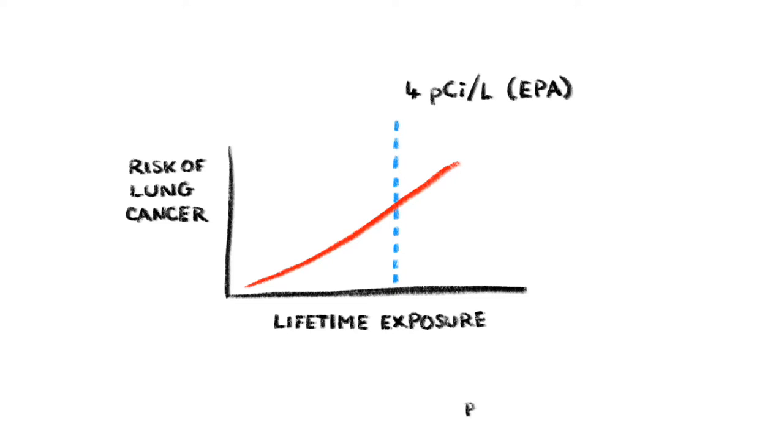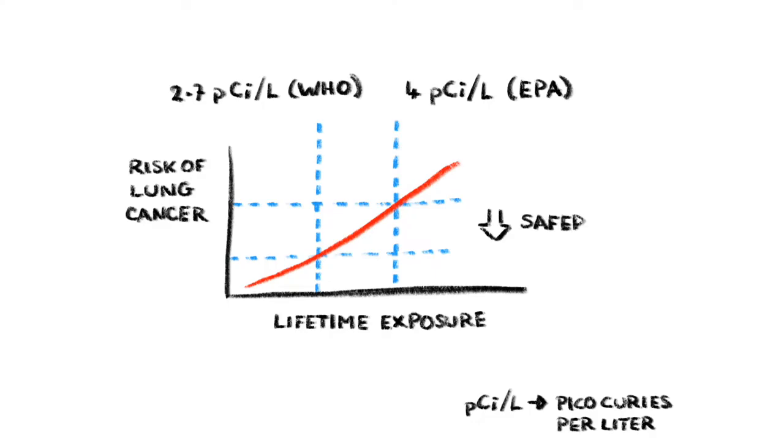In the US, the Environmental Protection Agency recommends you take action to reduce radon levels if they're above 4 picocuries per liter. The World Health Organization is a little bit more conservative here and suggests you do something about it if the levels are above 2.7 picocuries per liter.